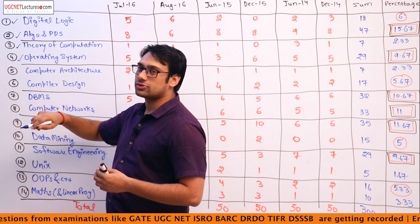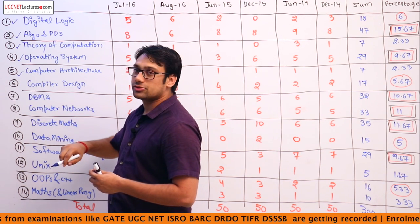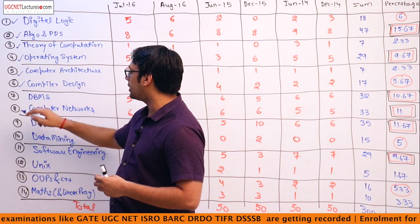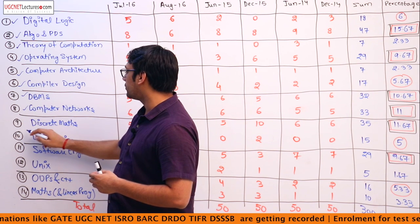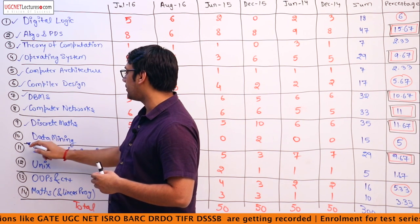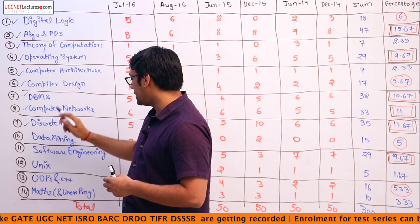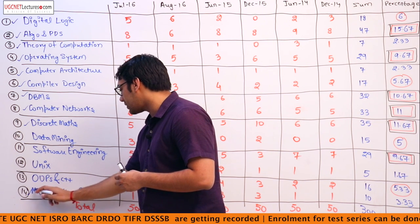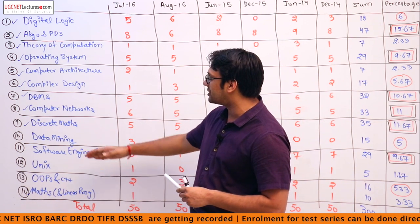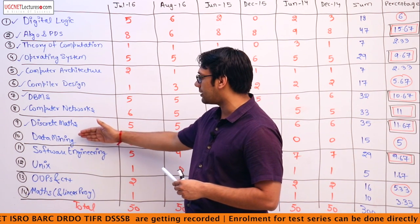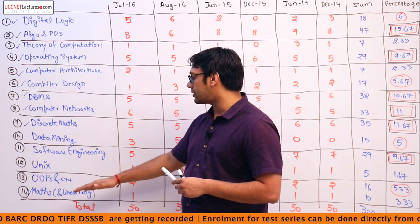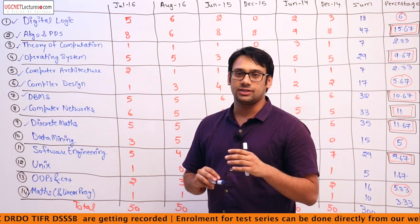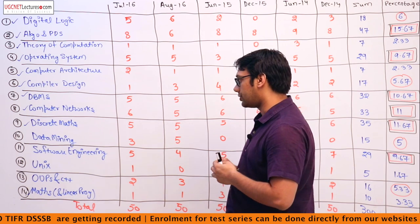Compiler design, DBMS, computer networks, and discrete mathematics are also in the GATE examination. Then we have mathematics and linear programming, etc. Subjects like data mining, software engineering, UNIX, OOPS, and C++ are not present in the GATE examination.